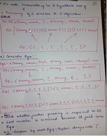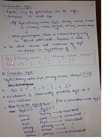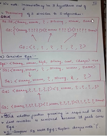Coming to the specific hypothesis: in specific hypothesis processing, we never deal with negative instances. So just copy the previous hypothesis — S2 is the same as S3. That's all.